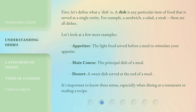Let's look at a few more examples. Appetizer: the light food served before a meal to stimulate your appetite. Main course: the principal dish of a meal. Dessert: a sweet dish served at the end of a meal. It's important to know these terms, especially when dining at a restaurant or reading a recipe.